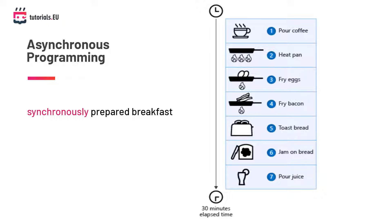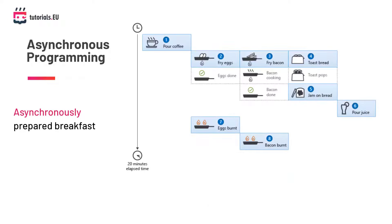We can actually speed up the process and optimize it using asynchronous methods. Using the asynchronous method, we can first pour the coffee, then start frying the eggs and bacon as well as turning on the toaster at the same time. Once the toast is done we can put some jam on it, then pour the juice and breakfast is ready. Tasks that do not depend on other tasks can be started together, while tasks that depend on others — like putting jam on toast — must wait. This whole process will take less than 20 minutes thanks to the asynchronous approach.